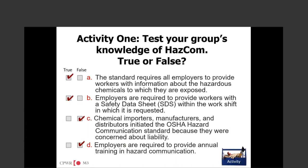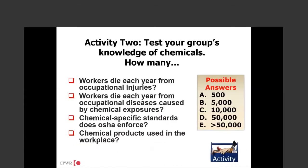Alright, hopefully everyone did activity one. Let's jump into activity number two. You have possible answers on the right-hand side of the screen and also on your sheet on the left-hand side. Those possible answers — those numbers — can be used more than once if you think you need to use them. Put the number you think is correct and appropriate next to each statement. I'll give you guys about 30 seconds to go ahead and do this one.